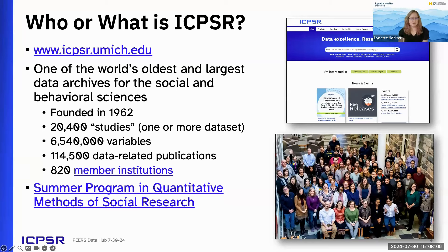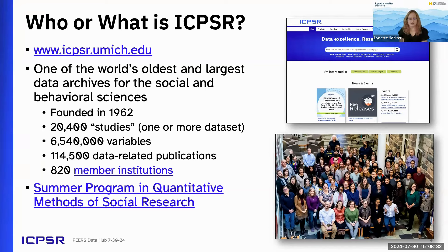We currently have just over 20,000 what we call studies, which is made up of one or more data sets. Often people hear the term study and think of a publication. We at ICPSR use the term to mean it's our basic container — a study might be one data set, or multiple data sets that are all related to each other. We also have many of our studies marked up at the variable level, so you can actually search more than 6.5 million variables, which makes it one heck of a question bank.